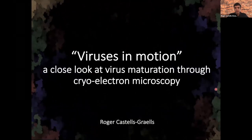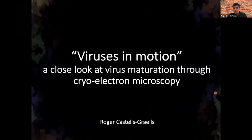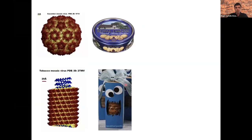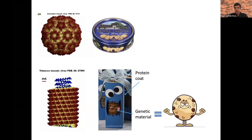Viruses are amazing. They can have lots of different shapes and sizes — they can be small, they can be big — and even though they look quite rigid, some of them can be very dynamic. I like to think about viruses as cookie boxes, because they have a protein coat, which would be the cookie box, and then genetic material, which would be the cookies — bad cookies that allow them to make copies of themselves and infect us.